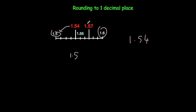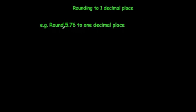If we wanted to round 1.57 to one decimal place, you can see it's closer to 1.6 than it is to 1.5, so it would round up to 1.6. When rounding to one decimal place, you look at the second decimal place. If it's a 5, 6, 7, 8, or 9, you round up. If it's a 0, 1, 2, 3, or 4, you round down.